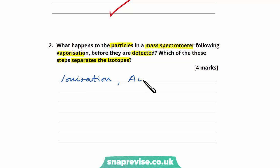Followed by acceleration, and then we have deflection before detection. So those are the steps between vaporization and detection as we're asked to give in the question. We're then asked which of these steps separates the isotopes. Now we know that it's deflection that separates the isotopes and we know they're separated according to their mass to charge ratio.